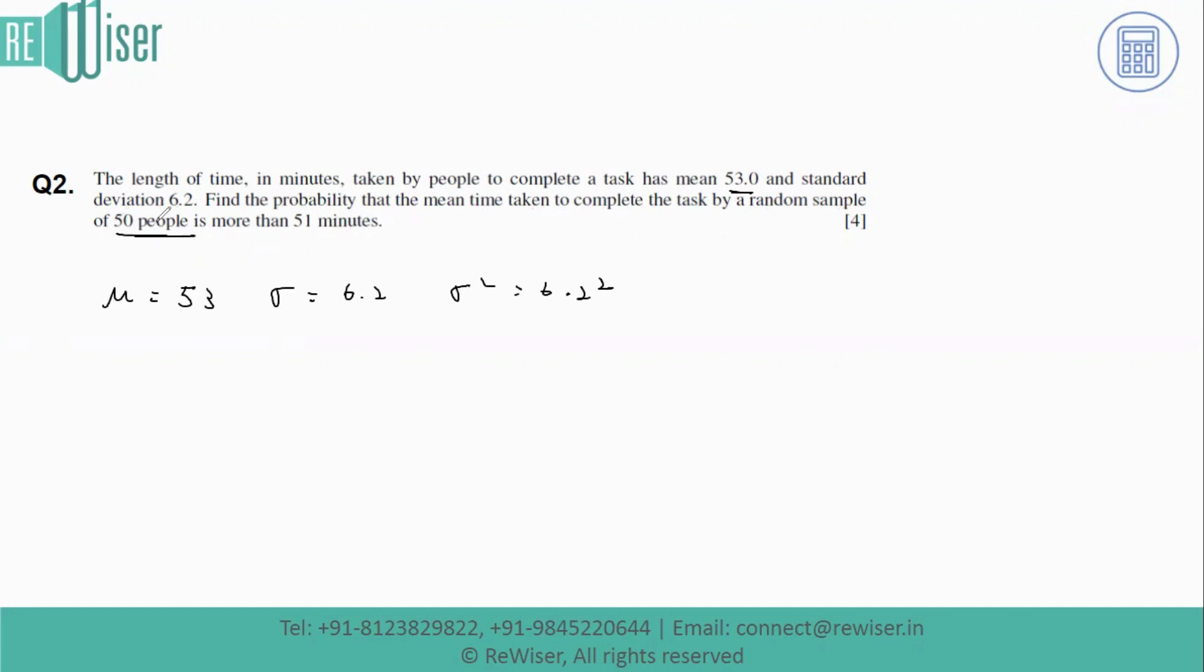The sample size is greater than 30, so we'll use the central limit theorem. That means we'll calculate the variance as sigma squared divided by n, which equals 6.2 squared divided by 50.